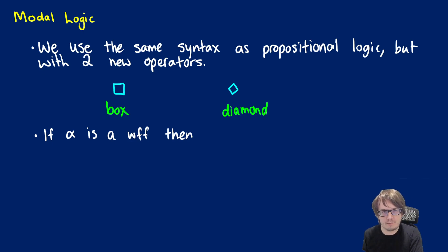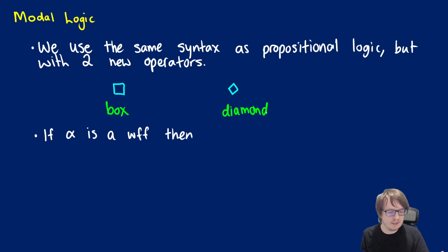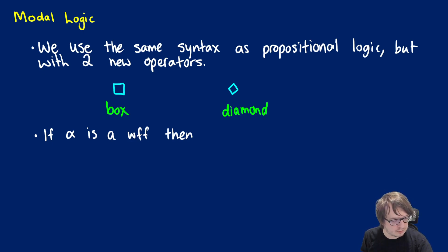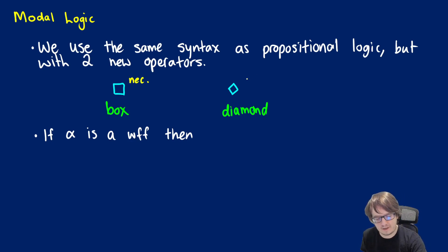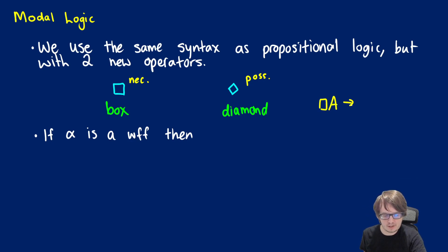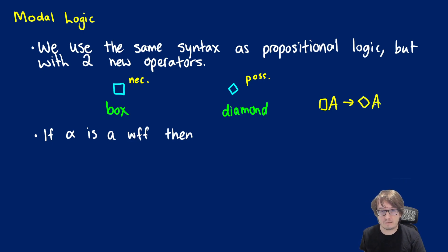The box is a stronger version of the diamond. Depending on what area of philosophy you're looking at, these boxes and diamonds will have different meanings. In one interpretation, you can think of the box as meaning 'necessary' and the diamond as meaning 'possibly.' So if something is necessarily true for some proposition A, then it would be possibly true, but you might not want to say that if something is possibly true then it's necessarily true.